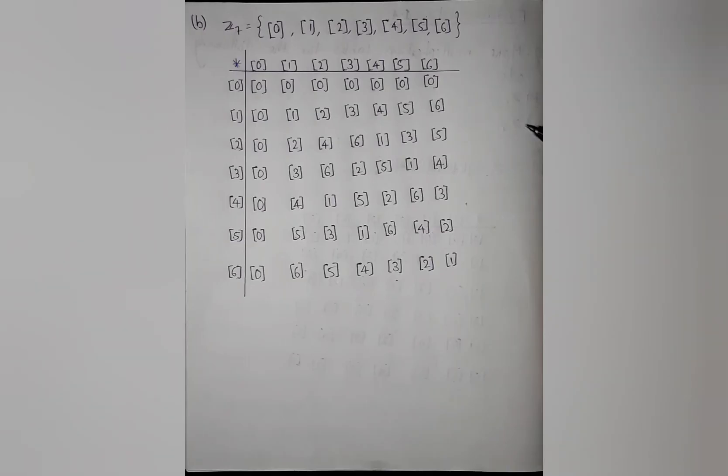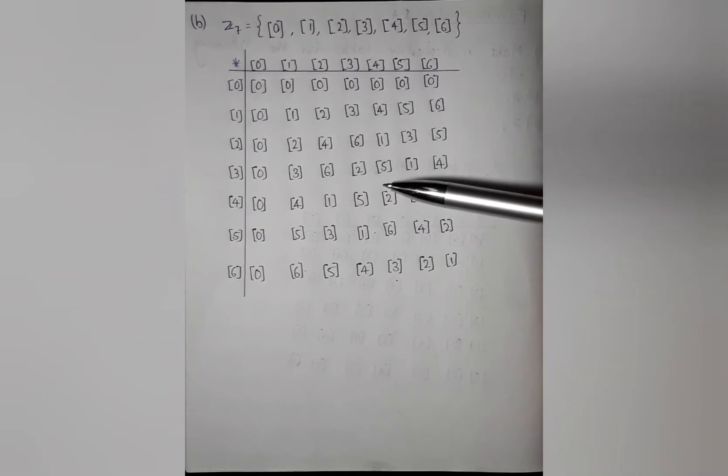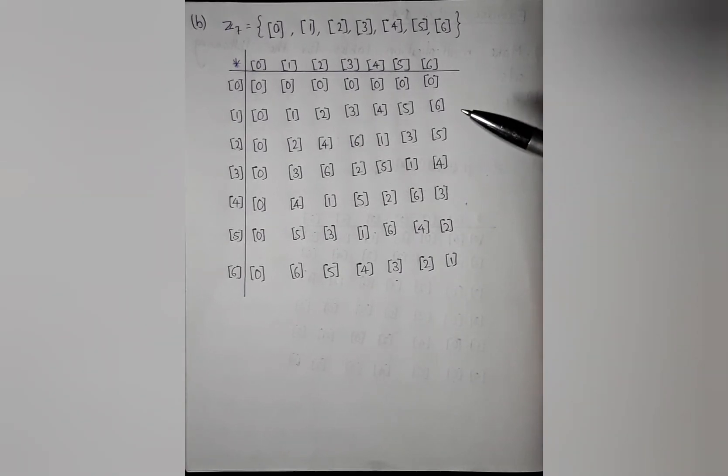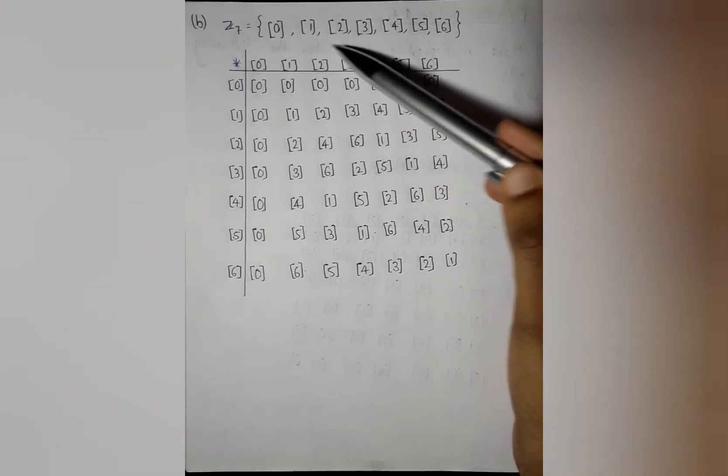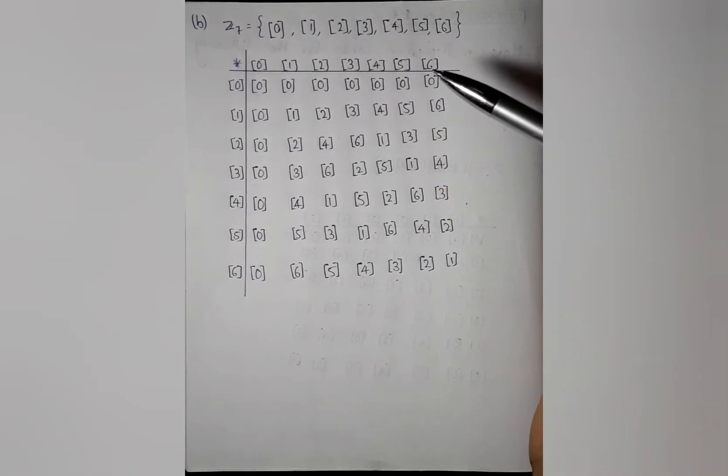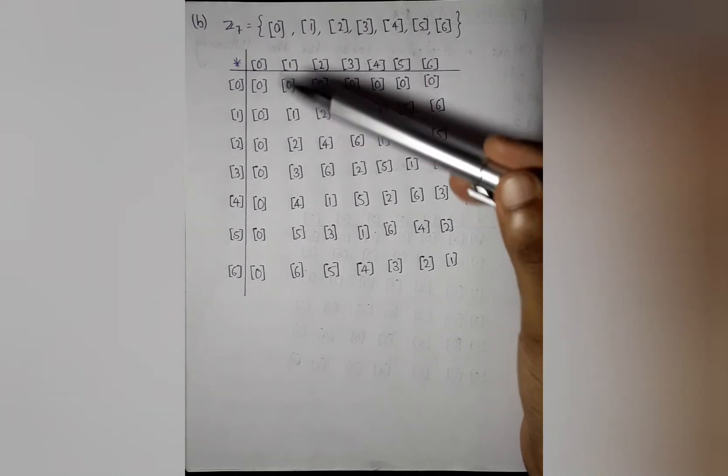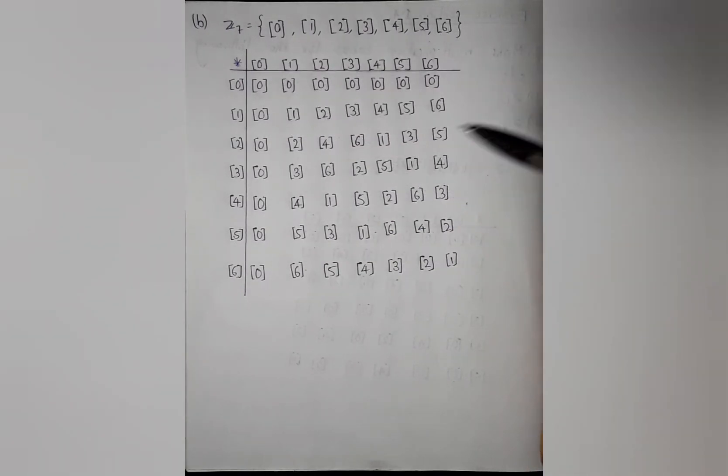Next, we can see the multiplication table of set 7. Set 7 have these 7 elements. We can write these 7 elements as vertically and horizontally like this.